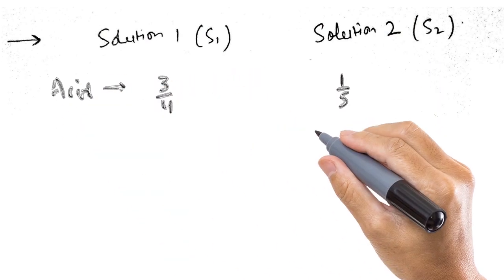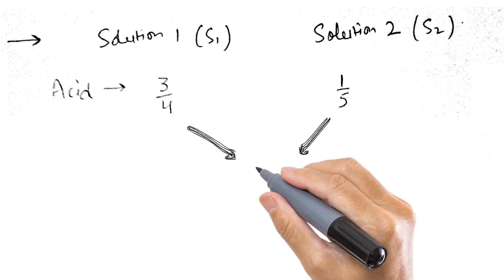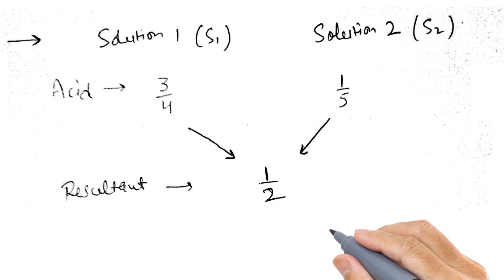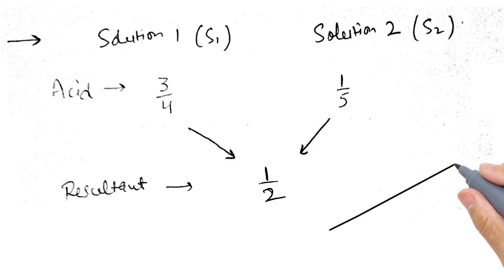On the top we write solution 1 and solution 2. The acid ratio is 3 is to 4 and 1 is to 5. And in the resultant we want it to be 1 is to 2. We are doing it in the similar way we did in the percentage problem. But it is wrong here.